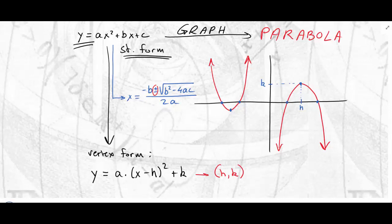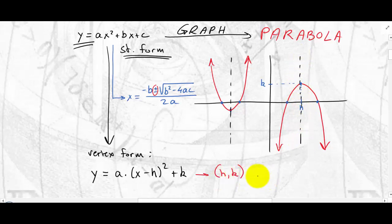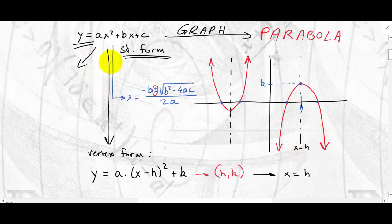The axis of symmetry is the vertical axis of the parabola. If you have the vertex form, it's very simple: x = h. But if you have the standard form, the axis of symmetry is x = −b / 2a.